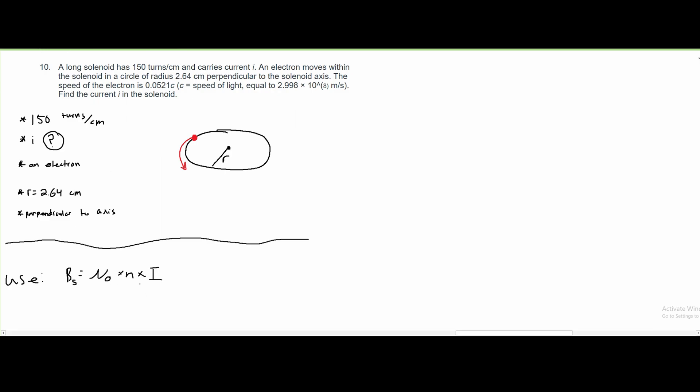We can rewrite this, since we need to find our I, so that our Bs is being divided by our U0 times N, and this equals I. We know our U0 because that's constant. We have the number of turns, which is 500. However, we don't know Bs.